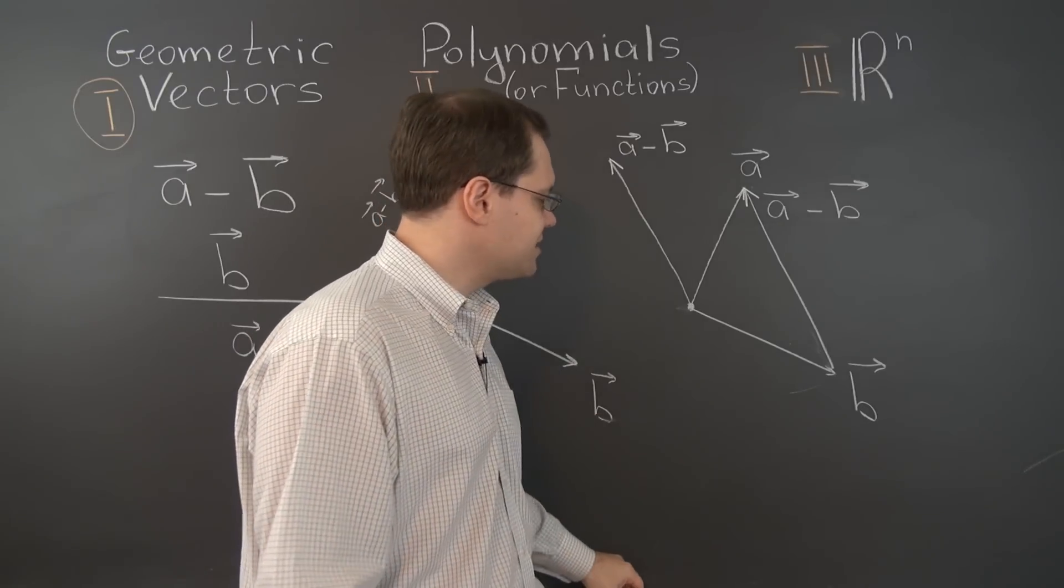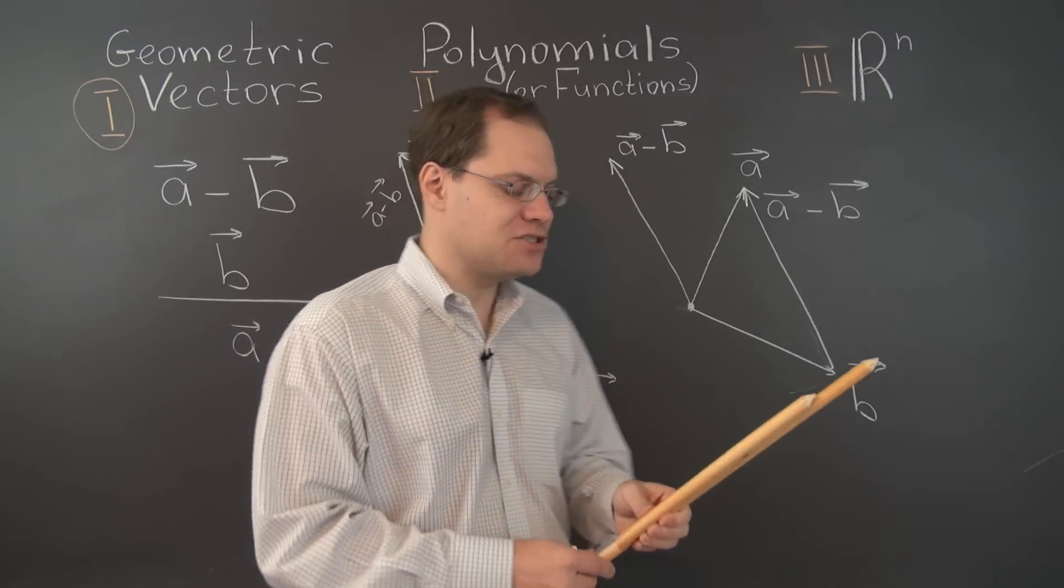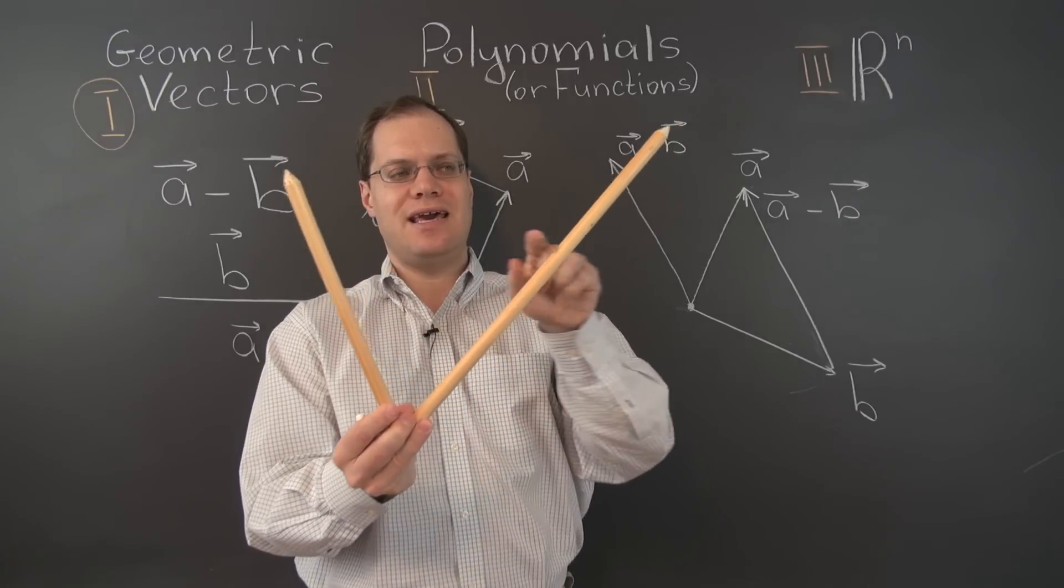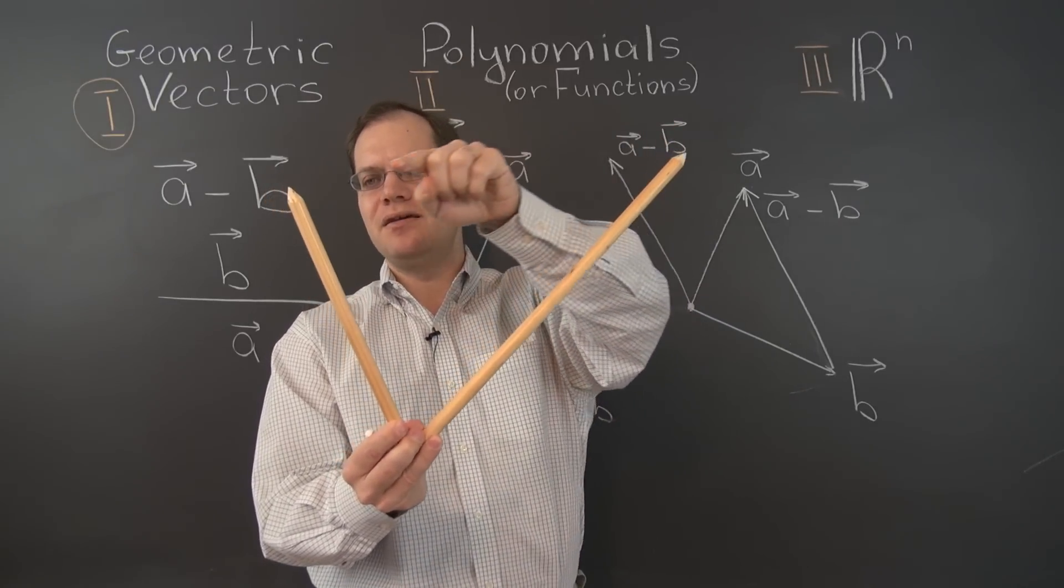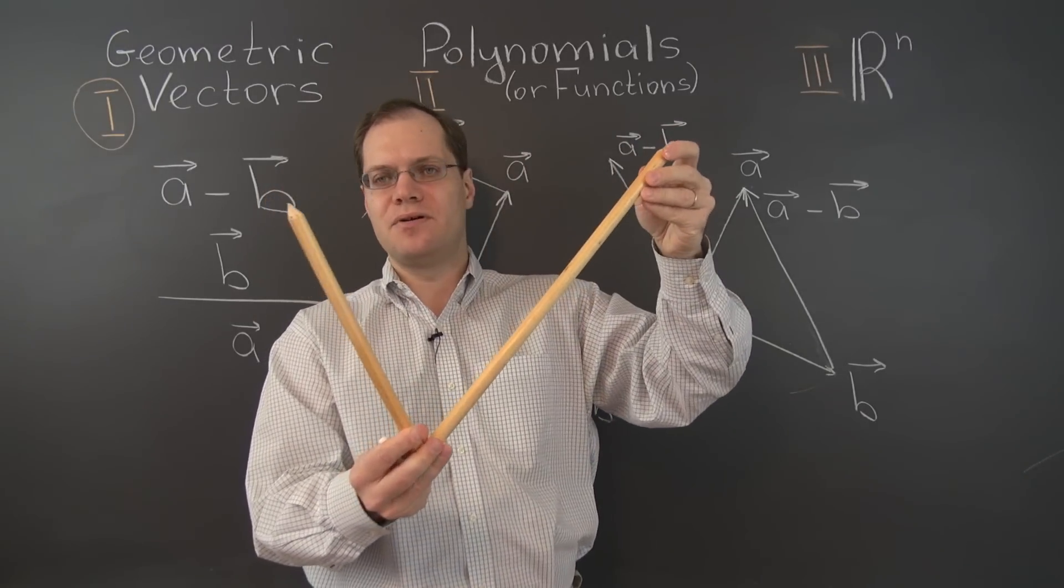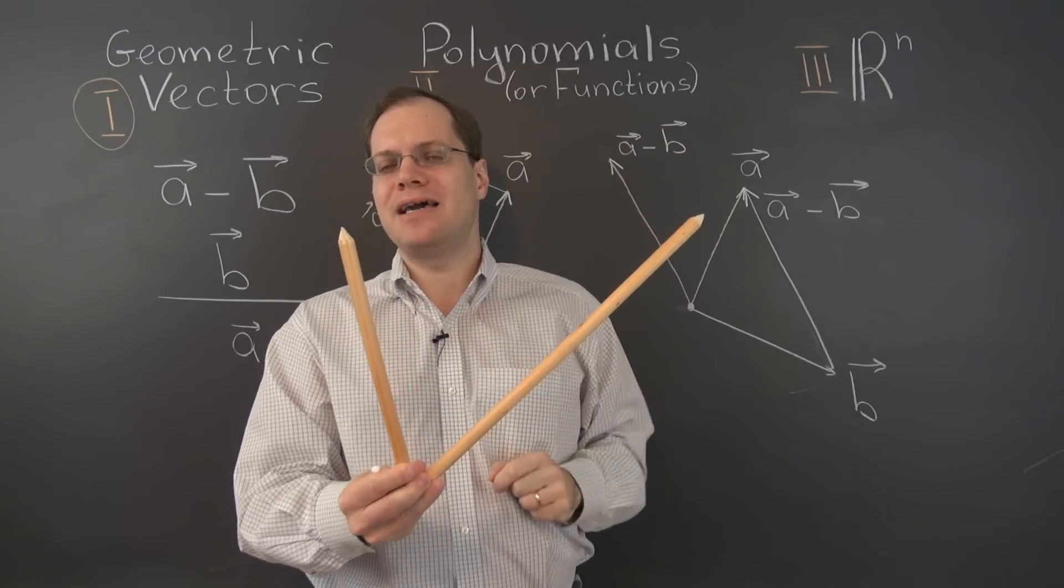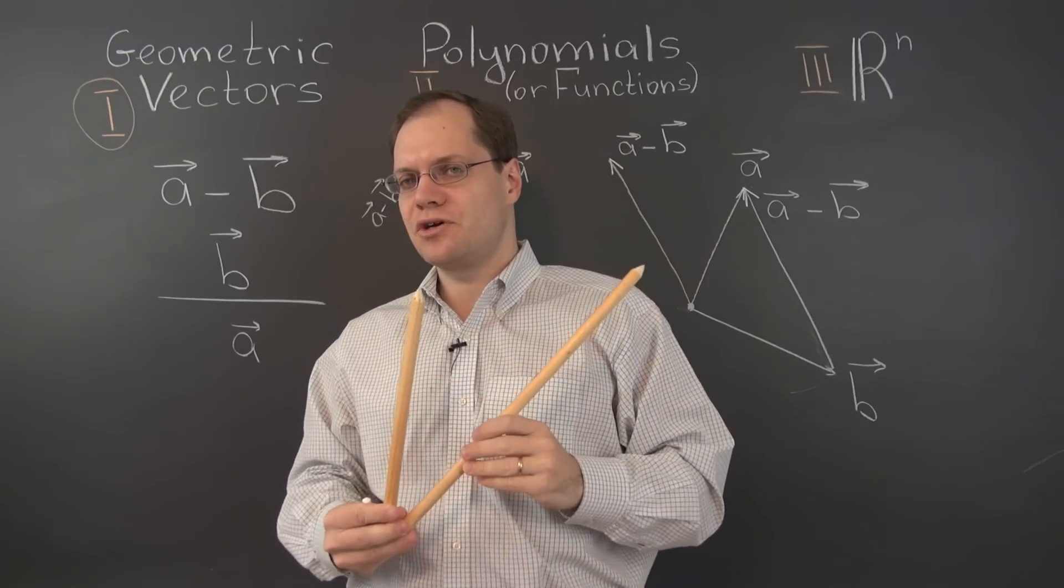Now of course, the exact same thing works in three dimensions as well. If this is A and B, A minus B will go from the tip of B to the tip of A. That will be A minus B. Both approaches actually work in three dimensions.